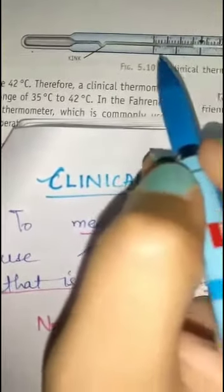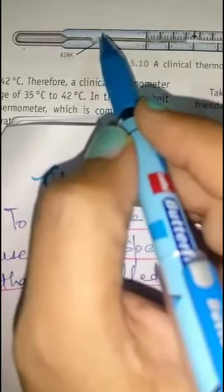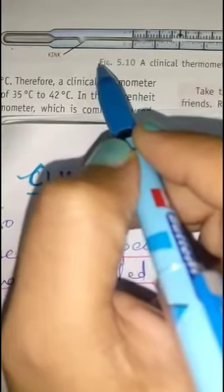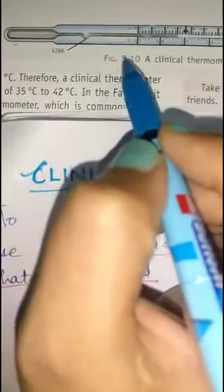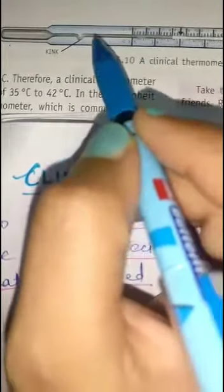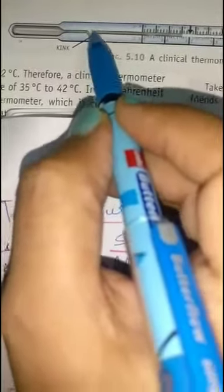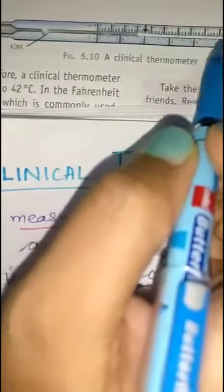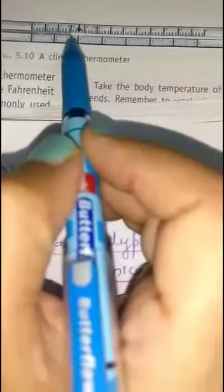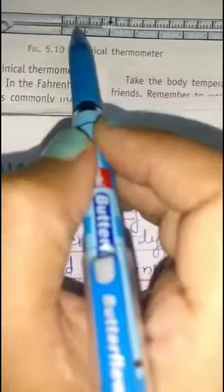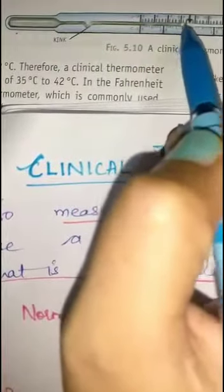In the clinical thermometer, there is a kink in the stem just above the bulb. When the thermometer is taken out of the mouth, the liquid in the bulb contracts and the mercury column breaks at the kink. Therefore, the level of mercury in the stem remains the same, so the reading does not change even after removing the thermometer from the mouth, giving an accurate reading.